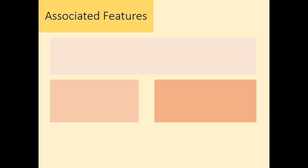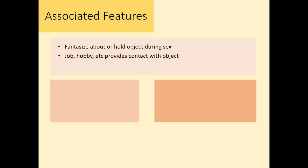Some things that go along with paraphilias: a lot of times the person who has an object as part of their sexual arousal can't always have that object with them, so they may find that they fantasize about it while having sex or masturbating. They might have the object with them — look at it or hold it — if they can. If it's been some time since they last had an opportunity to be with that object or situation, they may need to revisit it to reactivate the fantasizing capabilities. A lot of times they'll get a job or pursue a hobby that puts them in contact with the object or situation.